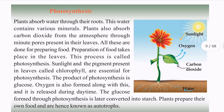What is photosynthesis? Plants absorb water through their roots. This water contains various minerals. Plants also absorb carbon dioxide from the atmosphere through minute pores present in their leaves.